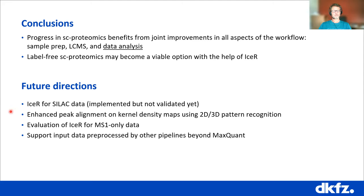For future directions: we already have a working version for SILAC data. We want to look into peak alignment and see if we can apply this in a 3D kind of pattern recognition to improve specificity. An interesting idea is to see if ICER can also perform in MS1-only data, relying on DICE identity propagation exclusively from a reference dataset, which may give advantages in sensitivity and number of data points for quantification across chromatographic peaks. And it would also be great to accept other types of processed data from raw mass spec data beyond MaxQuant input.